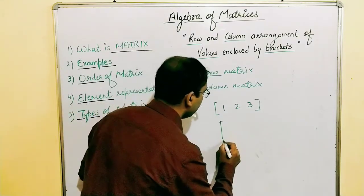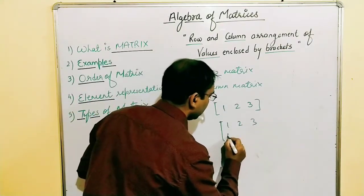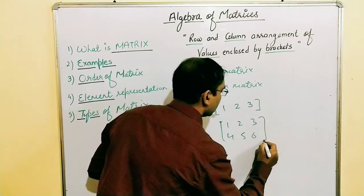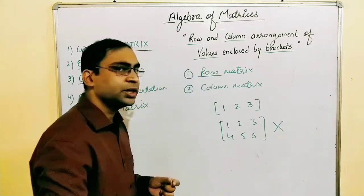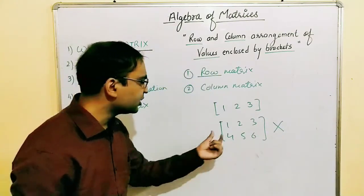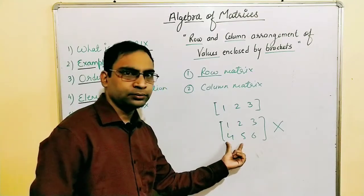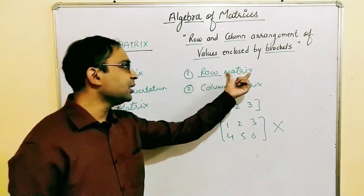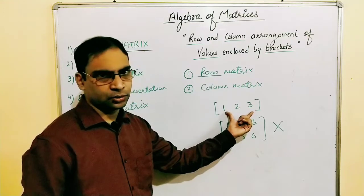That means if I write a matrix [1, 2, 3; 4, 5, 6], this will not be a row matrix because it has more than one row. So the row matrix is a matrix with a single row.